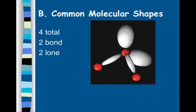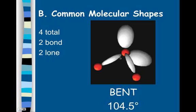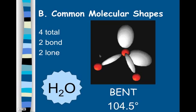Another common molecular shape is the bent molecule. We have four pairs of electrons total, two of which are bonding and two of which are lone pairs resting around the central atom. The lone pairs push on both ends, closing the bond angle to 104.5 degrees. One of our favorite molecules is, of course, water, H₂O. I'm going to show you how this relates to Lewis structures in class.